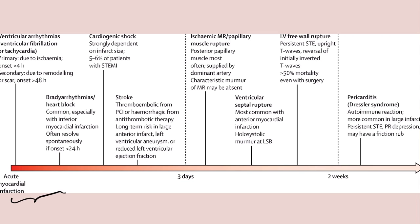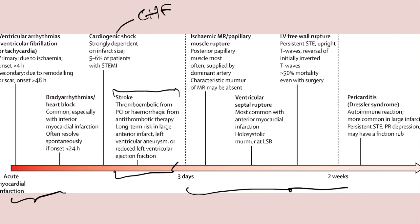After arrhythmias, we move into issues with the heart's ability to pump — either cardiogenic shock or congestive heart failure. Stroke is another adverse effect, usually of treatment such as PCI or thrombolysis. Then we have the mechanical issues: papillary muscle rupture, ventricular septal rupture, and free wall rupture. Finally, pericarditis, which is much more long-term.